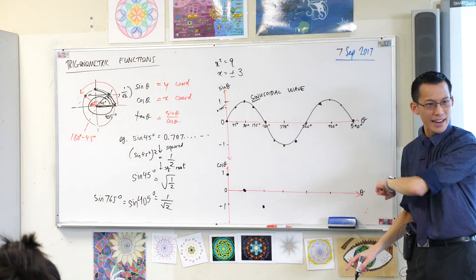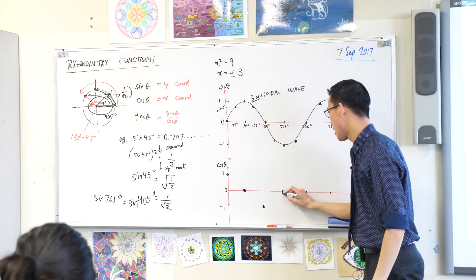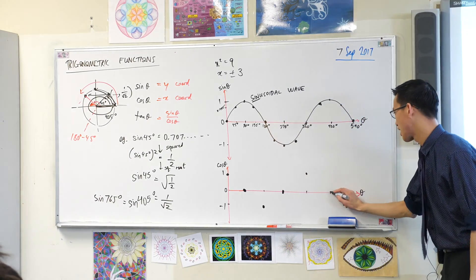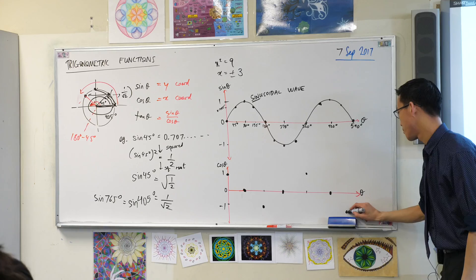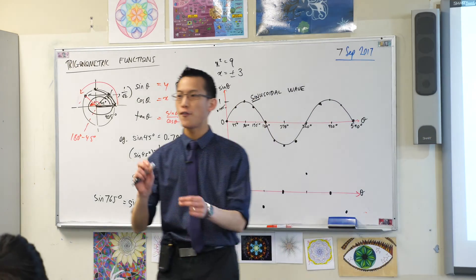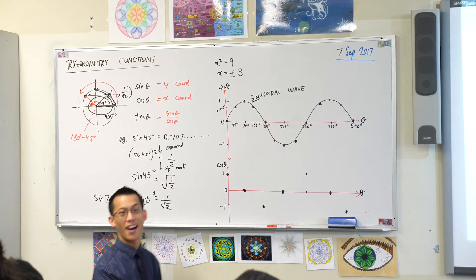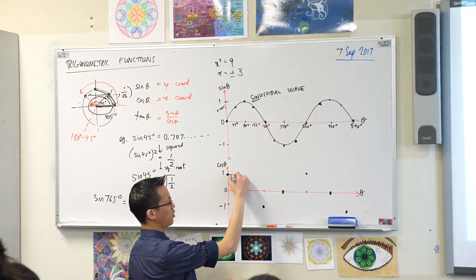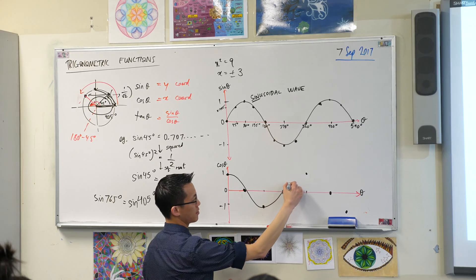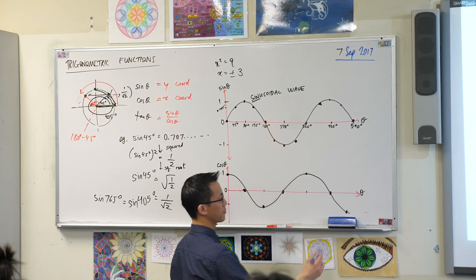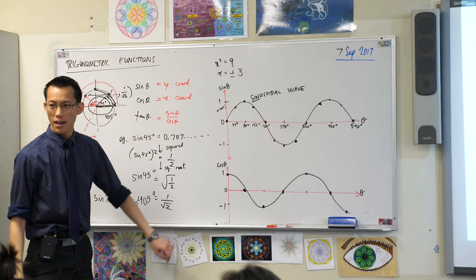Now, you're starting to get a pattern here, aren't you? It's going to come back up to zero. It's going to go to one. And it's just going to keep on doing its dance. Now, if you fill in some in-between points like I did up here, you will find a very familiar shape emerging. It's going to look like this.